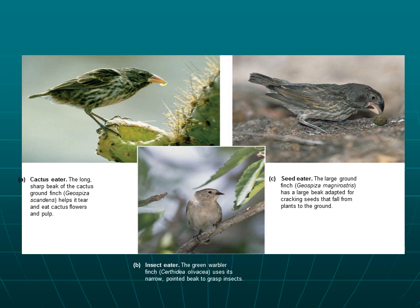Darwin studied finches, and here we have three different species of finches. If you note their beak shape, you can see that they're all fairly different. The bird on the upper left hand side is a cactus eater — the long sharp beak of the cactus ground finch helps it tear and eat cactus flowers and pulp. That would be important for a bird that needs nutrients from within a tough plant; it has to have a beak that allows it to access that food source.